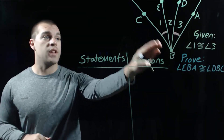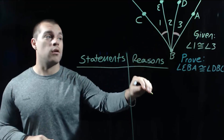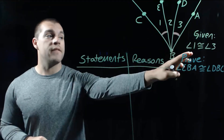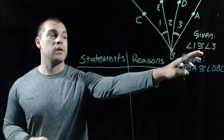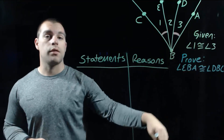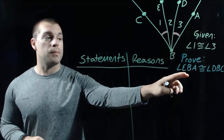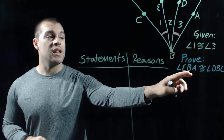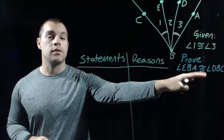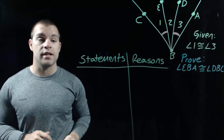In this first example, we're taking a look at this diagram. We're given that angle 1 is congruent to angle 3, and we want to prove that angle EBA is congruent to angle DBC.